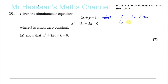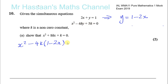So I'm going to put y equals 1 minus 2x instead of y in the second equation. So I have x squared minus 4 times k times, and I replace y with 1 minus 2x — giving x squared minus 4k times 1 minus 2x plus 5k equals 0. Now I've substituted this expression instead of y.